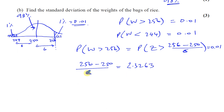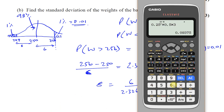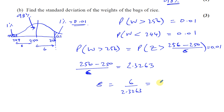So sigma equals 6 divided by 2.3263, which gives 2.579, or written to 3 significant figures, sigma equals 2.58 grams. That's the standard deviation, and that completes part b.